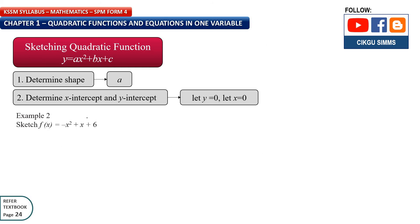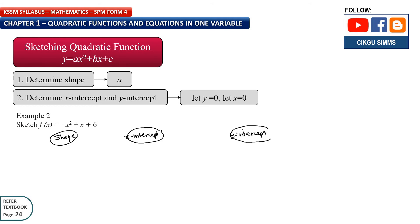Example 2: Sketch f(x) = -x² + x + 6. First find the shape. A is -1. Since -1 is less than 0, the shape is a sad face (opening downward).